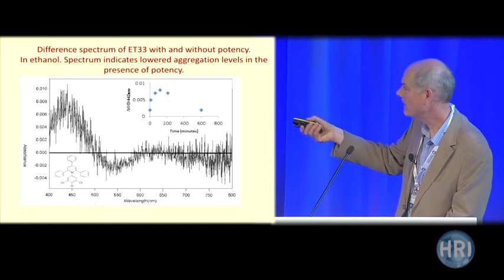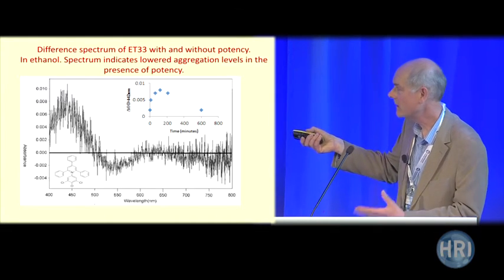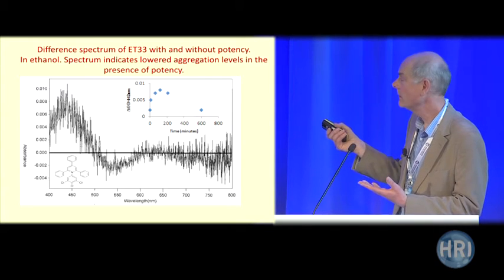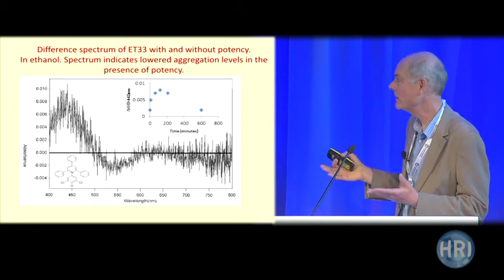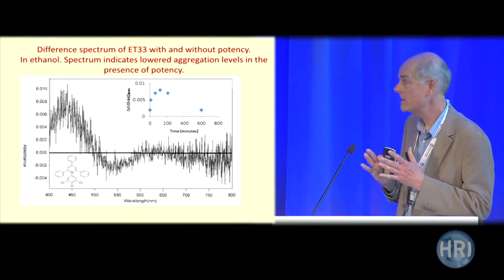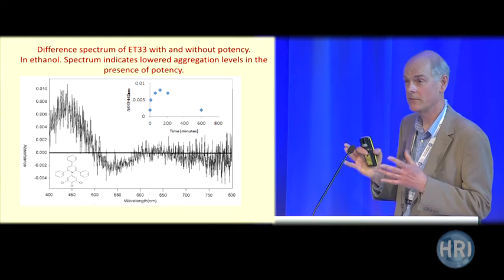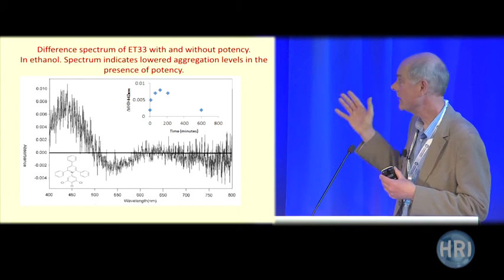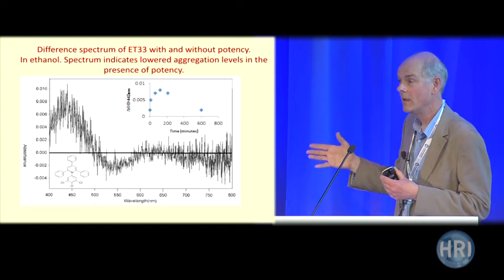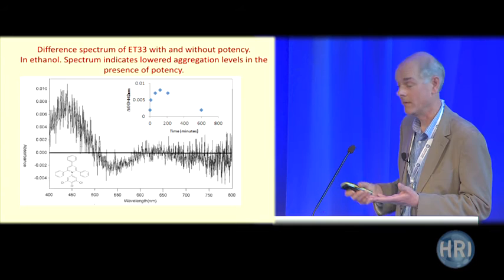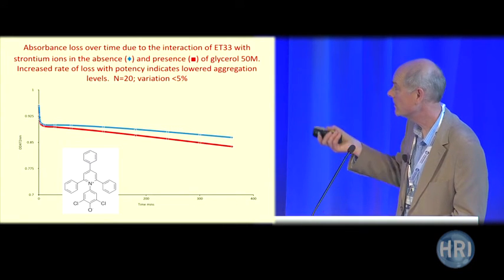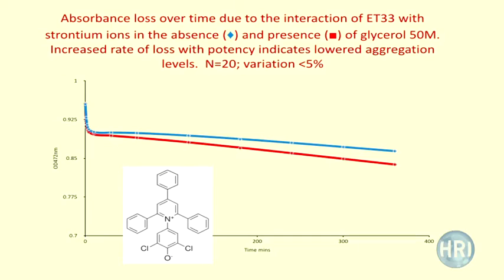If we hypothesize that the dye is disaggregating in the presence of potency, an independent experiment would be to use divalent cations like strontium — these dyes interact with strontium and lose their absorbance. If potency enhances disaggregation, the dye should be more sensitive to strontium ions. And in fact that's what happens: in the presence of strontium ions plus potency, there's a greater decrease in absorbance compared to control, showing that potencies are lowering aggregation levels.